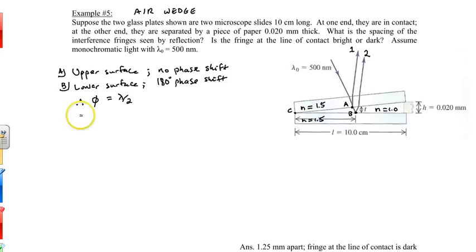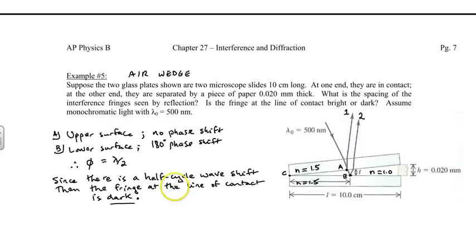Since there's a half cycle wave shift that occurs at C because these are out of phase with each other, the fringe at this line of contact point C is going to be dark. You'll have destructive interference.